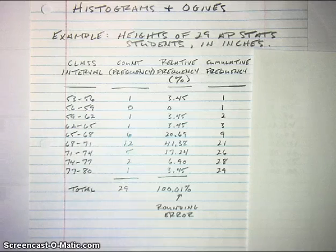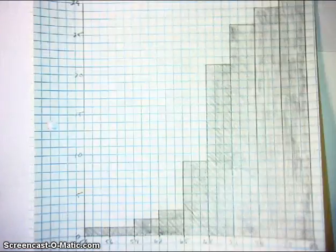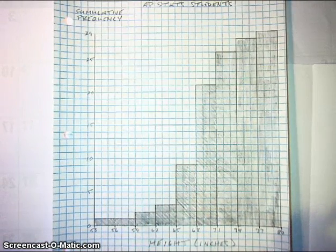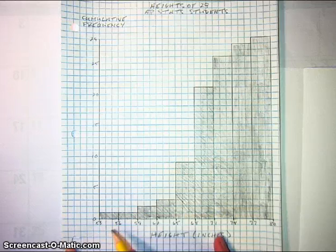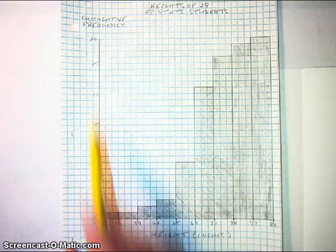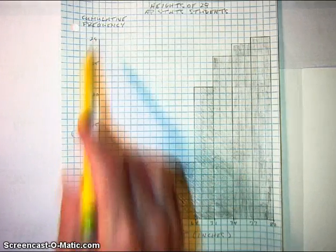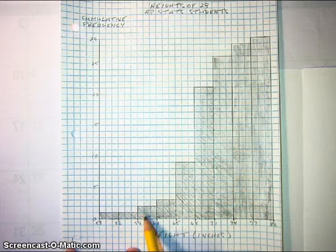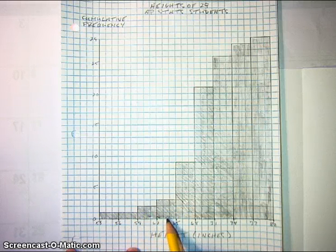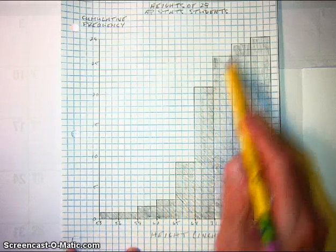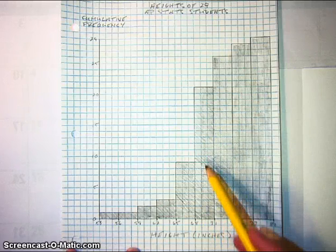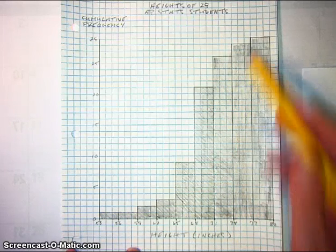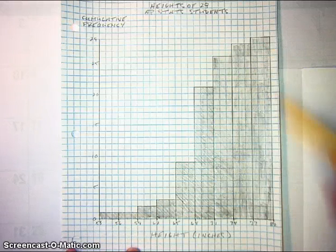We can make a histogram out of these cumulative frequencies. It still has height on the horizontal axis in inches, running from 53 to 80, broken up into 3-inch class intervals. On the vertical axis we have cumulative frequency, which runs from 0 up to 29. The bars grow and accumulate as we go along — one observation in the first interval, staying at 1 for the second, rising to 2 in the third, 3 in the fourth, and so on until we reach 29 observations. This type of graph appeared on the 2002 AP Statistics released exam.